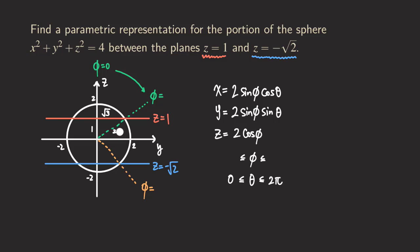This is actually a special right triangle — the 30-60-90 degree right triangle. The angle facing the side of length square root of three is 60 degrees. So phi equals 60 degrees, which means our lower bound for phi is pi over three.